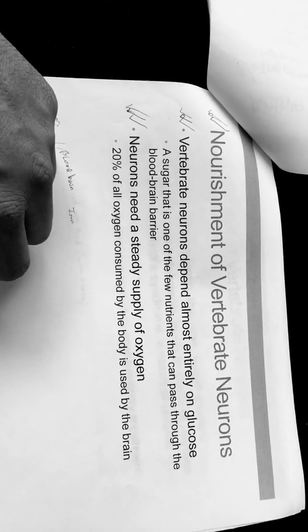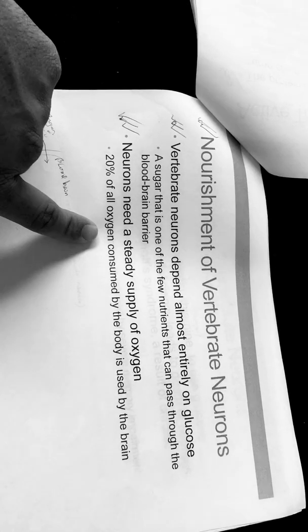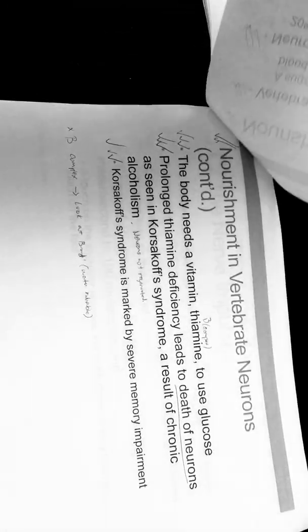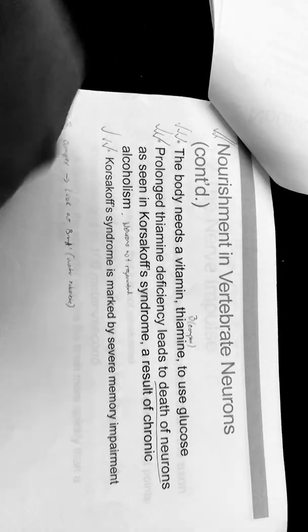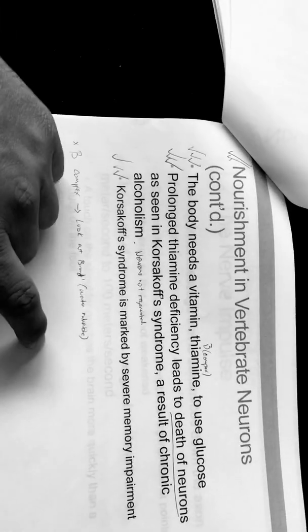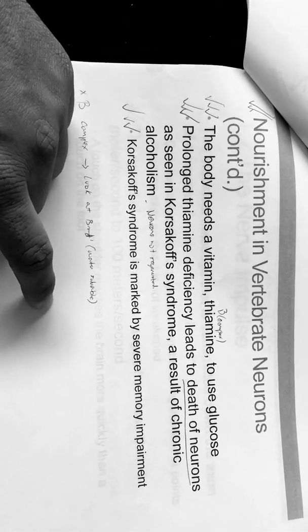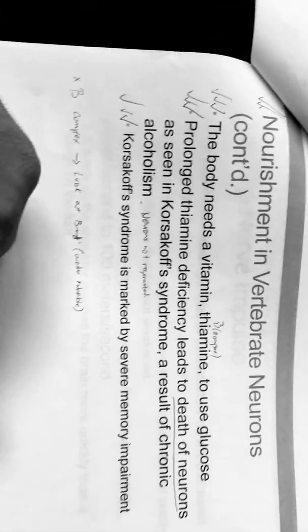Obviously, I talked about oxygen, so 20% of all oxygen consumed by the body is used by the brain. Neurons need a steady supply of oxygen. The body needs specific vitamins to help transmit the glucose, so that would be vitamin thiamine or B-complex.